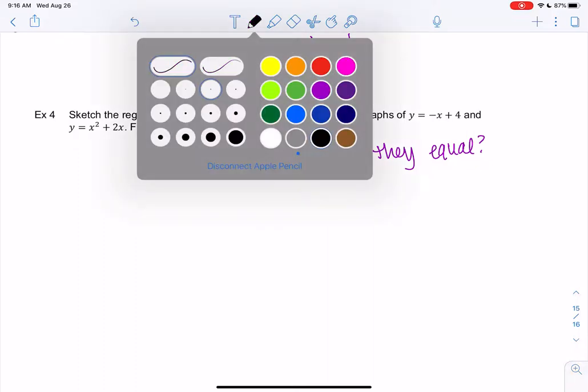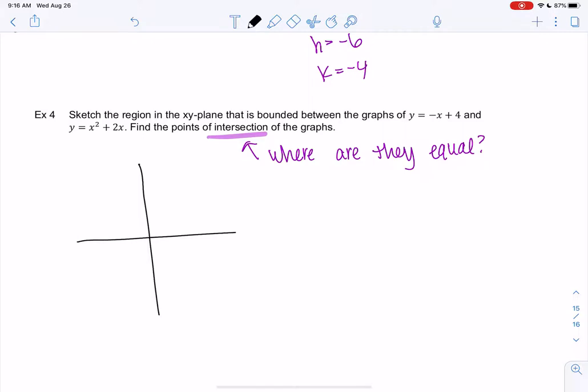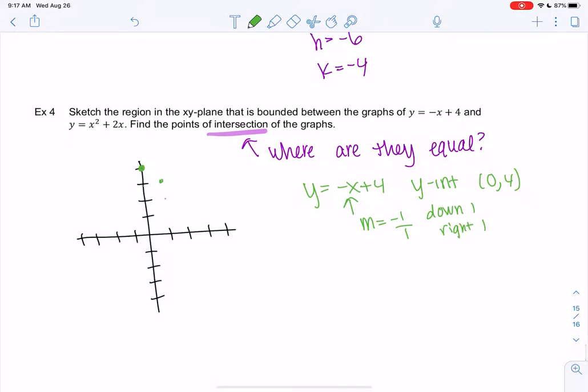So let's graph the line first because lines are a little easier. The line y equals negative x plus 4. My y-intercept is 0, 4, right? That's my b value. And then my slope is negative 1, which means we go down 1, right 1. And we'll get a line.